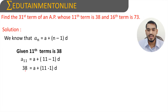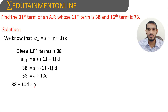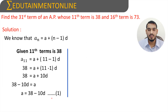Transposing 10d to the left hand side, we get 38 minus 10d equals a, therefore a = 38 - 10d. Let us consider this as equation number 1.